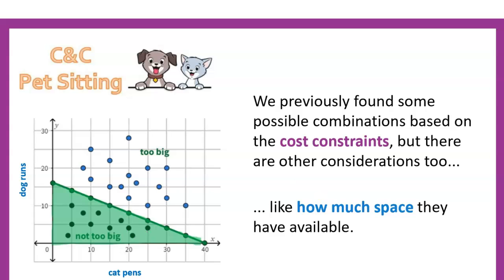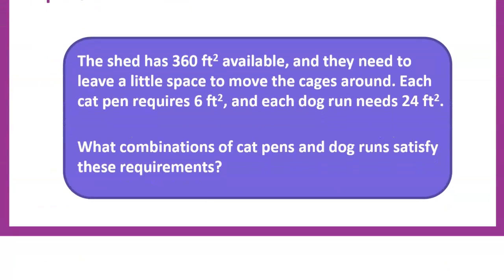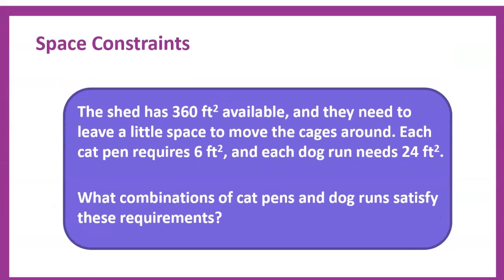In their shed they have 360 square feet available, but they need to leave a little space to move cages around so they can't fill all 360. Each cat pen requires 6 square feet and each dog run requires 24 square feet. We want to find what combinations of cat pens and dog runs satisfy these requirements — we need the total space used to be less than 360, which sounds like an inequality problem.